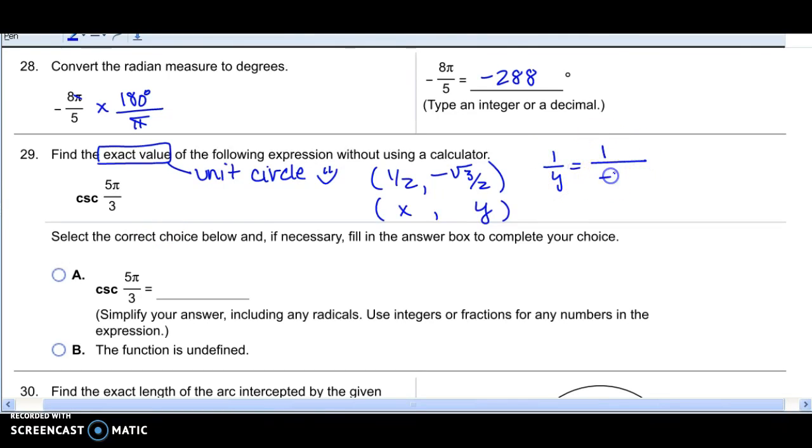So 1 over the negative square root of 3 over 2, I need to invert and multiply. It becomes 1 times 2 over the negative square root of 3. Well, that's just negative 2 over the square root of 3, but you have to do what? Rationalize that denominator. So I end up with a negative 2 square root of 3 all over 3.